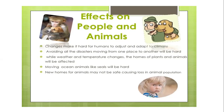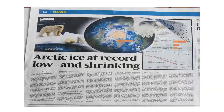Effects on people and animals: changes make it hard for humans to adjust and adapt to climate, avoiding disasters and moving from place to place. Deforestation worsens weather and temperature changes. The homes of plants and animals will be affected. Moving ocean animals like seals will be harmed. New homes for animals may not be safe, causing loss of animal population.